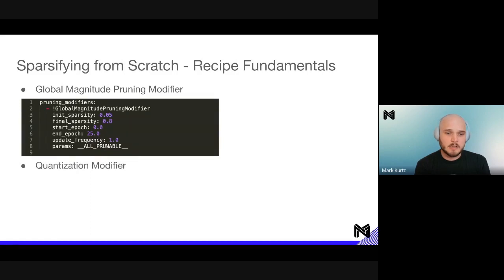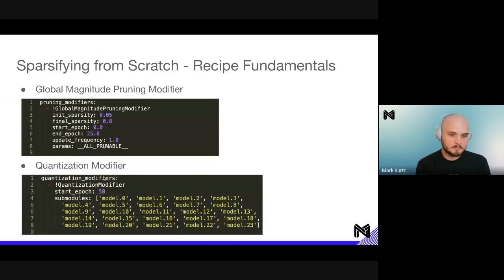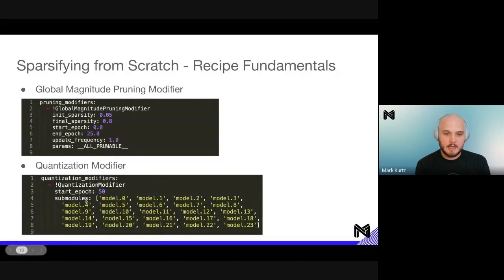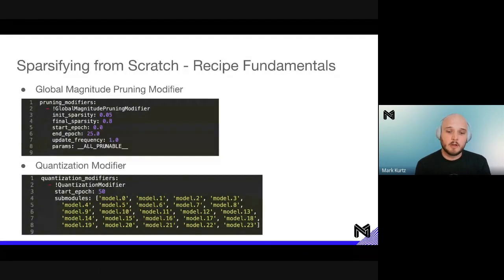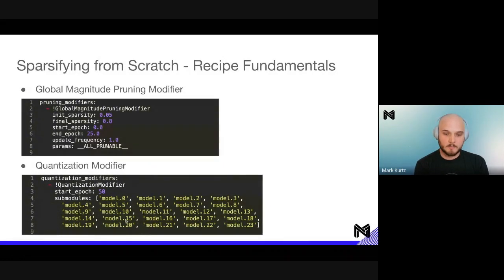Finally, the quantization modifier is enabled in SparseML as well. You set up a general group and then a quantization modifier — the core settings being the epoch to start (for example, epoch 50) and which modules within our PyTorch model to quantize. If you just put 'model' here, it will go through and quantize everything within that model. For YOLO v5, we don't want to quantize the NMS at the end, so we just target the high-level layers built inside.